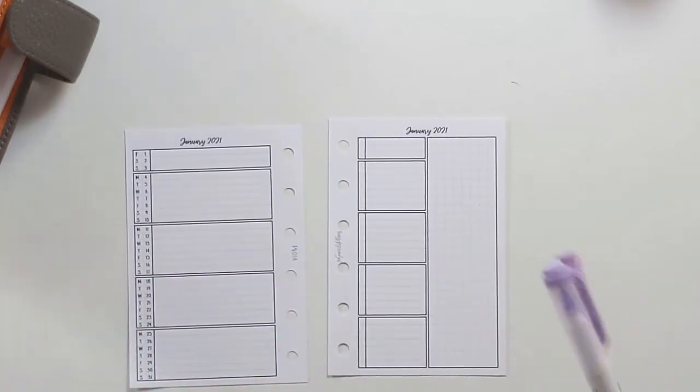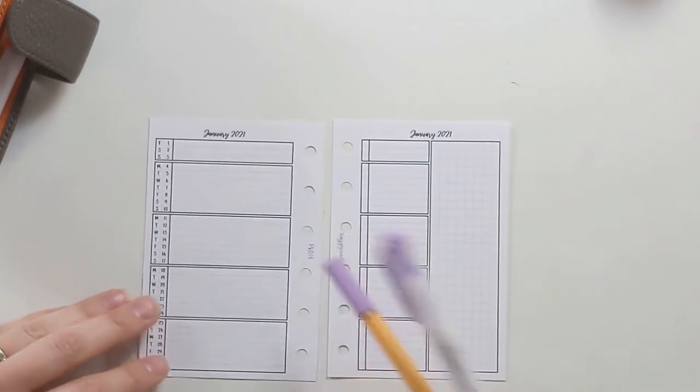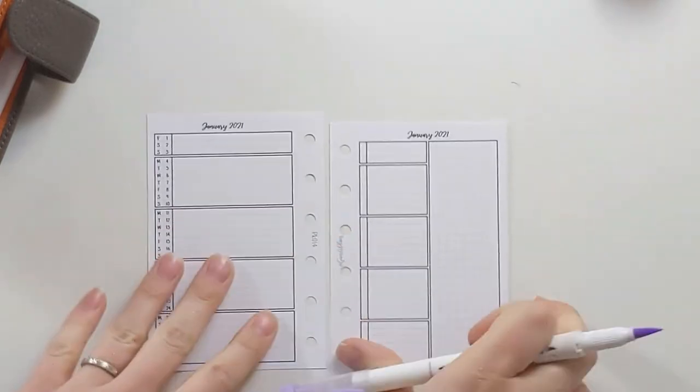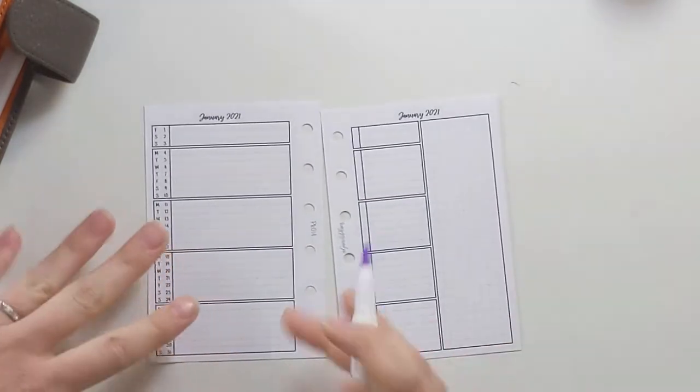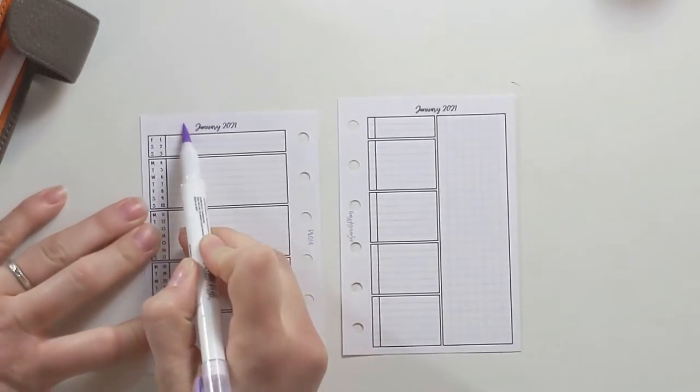And so I'm going to be using today insert number 14. This is the dated monthly. It comes in three-month chunks which you can print back to back or separately like this. And I'm going to go for a purple theme this year because why not?